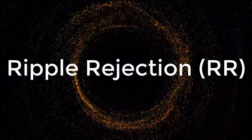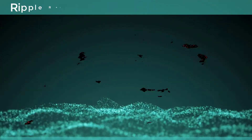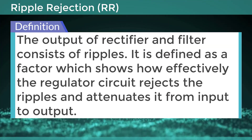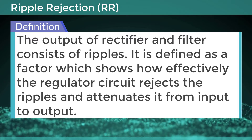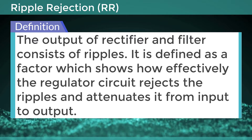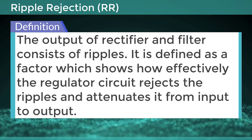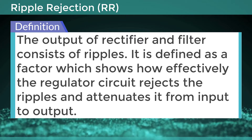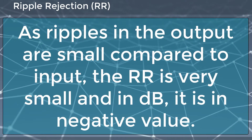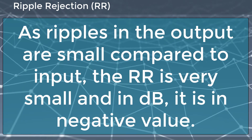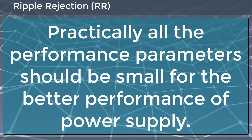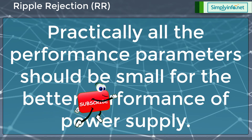Ripple rejection (RR): The output of the rectifier and filter consists of ripples. Ripple rejection is defined as a factor which shows how effectively the regulator circuit rejects the ripples and attenuates them from input to output. As ripples in the output are small compared to input, the RR is very small, and in dB it is a negative value. Practically, all performance parameters should be small for better performance of the power supply.